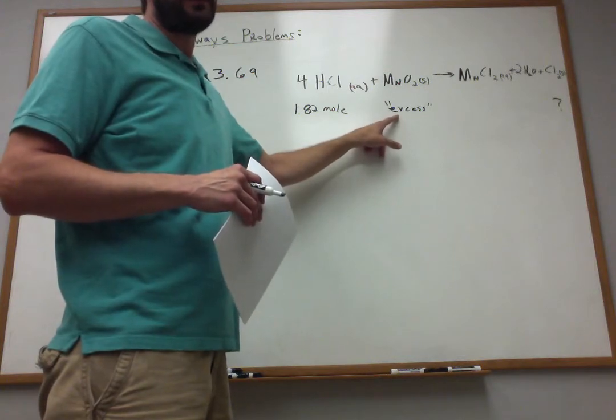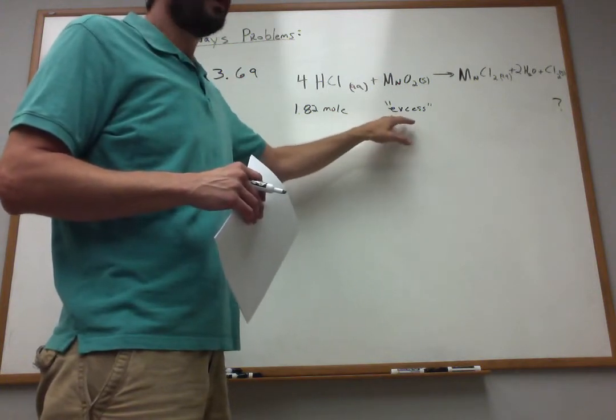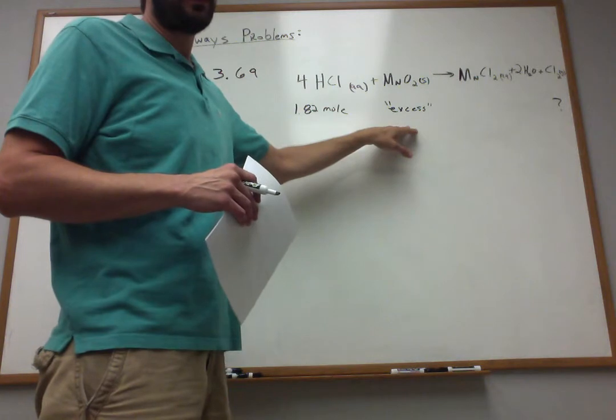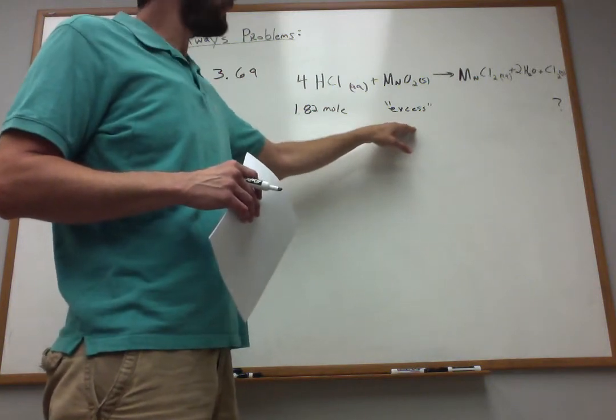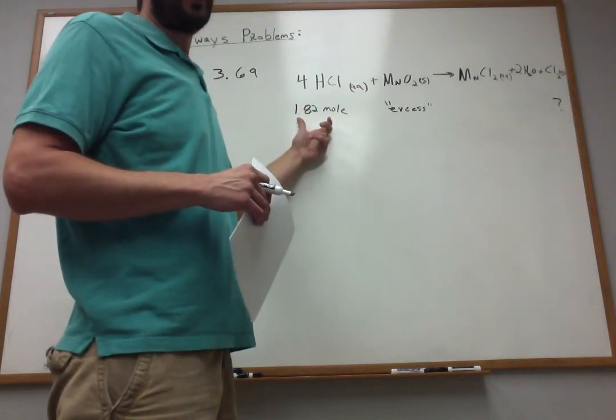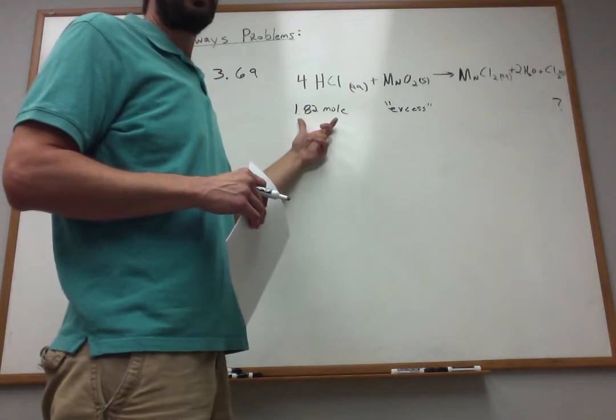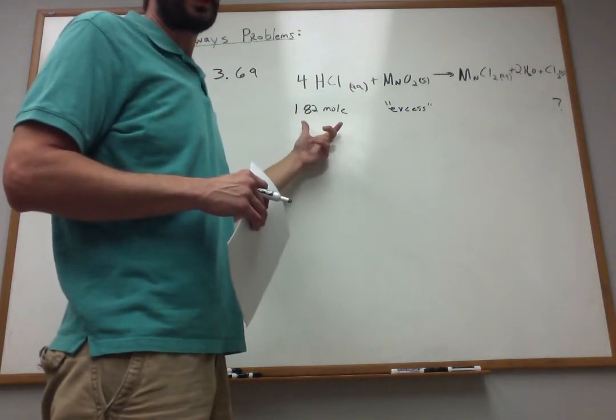We never use the excess. It helps you a lot because it tells you you have plenty of this in your reaction system. You've got a ton of it, but this you've only got 1.82 moles. So the problem is basically telling you you're going to run out of this first.